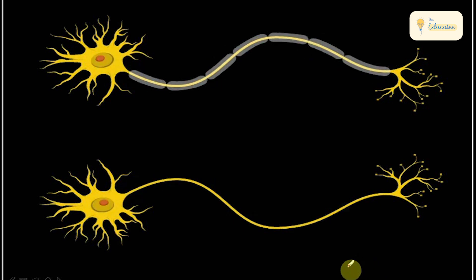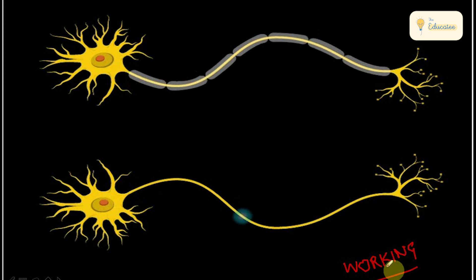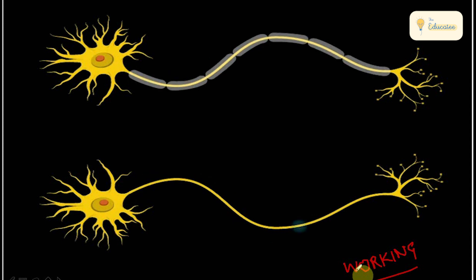Now we will study the working of neurons — a very important topic. From the last video, we know that receptors are present everywhere in our body through the sense organs. These receptors receive different stimuli — for example, the skin has thermal receptors for heat, pressure, etc. — and they work to receive information from the environment.